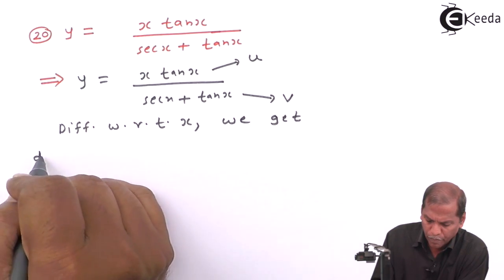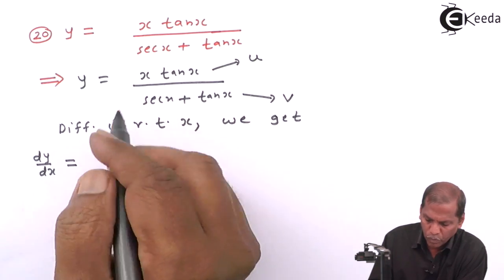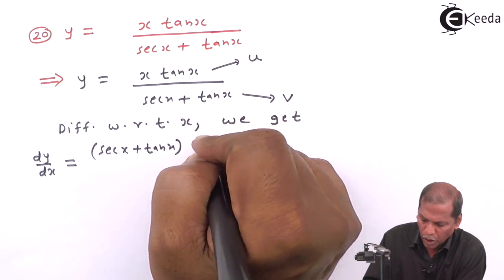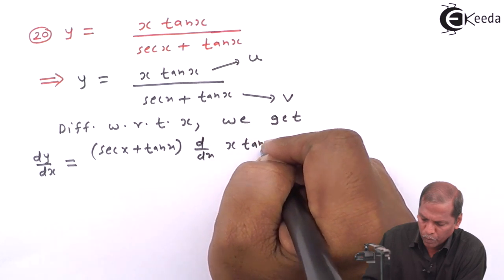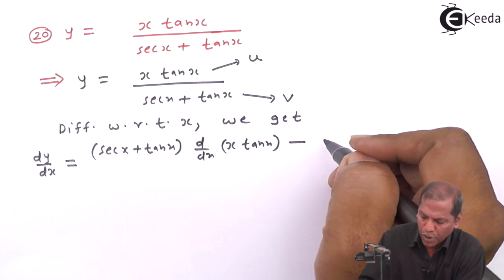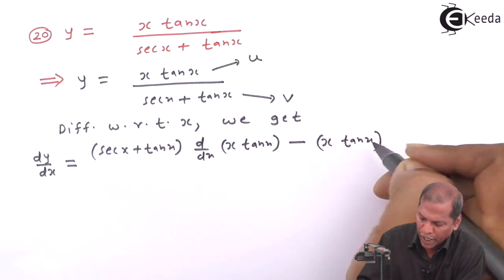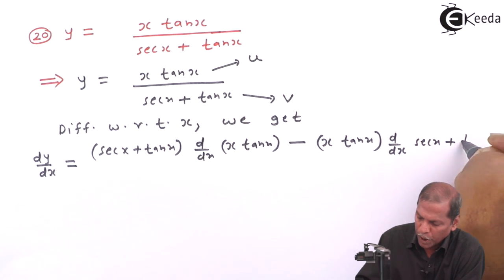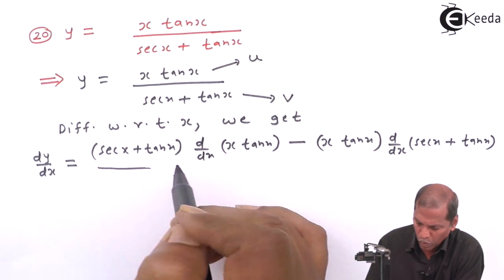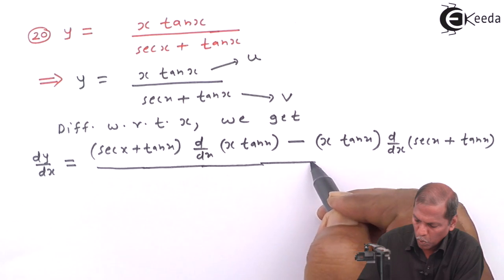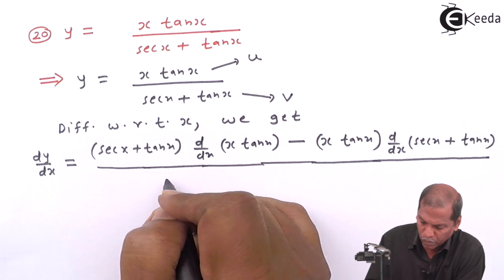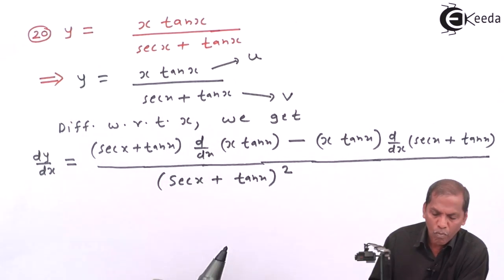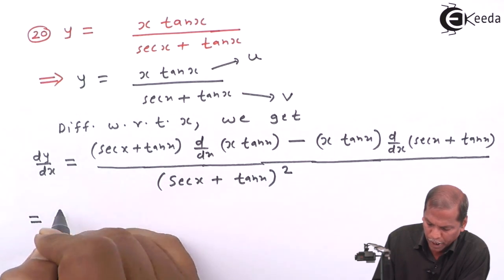The derivative dy/dx equals: sec(x) plus tan(x), written as it is, into d/dx of x times tan(x), minus x times tan(x) written as it is, into d/dx of sec(x) plus tan(x), the whole thing divided by sec(x) plus tan(x), whole bracket squared.